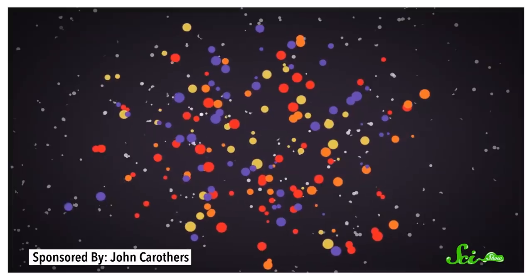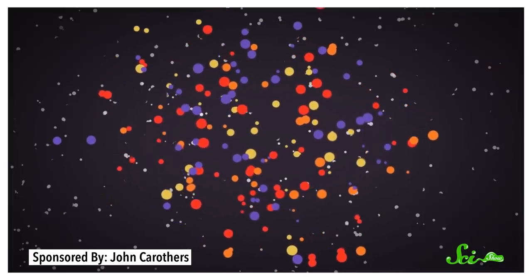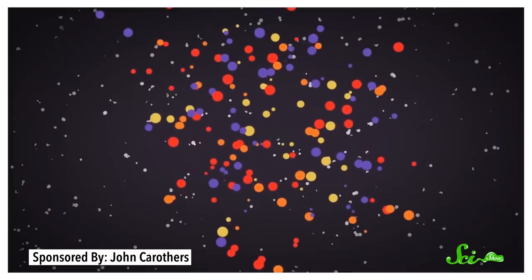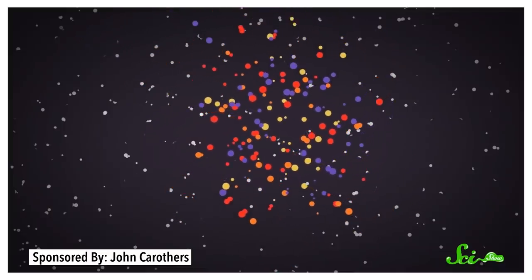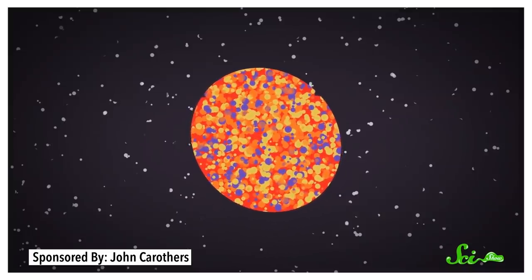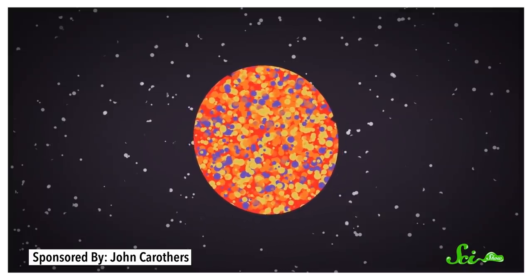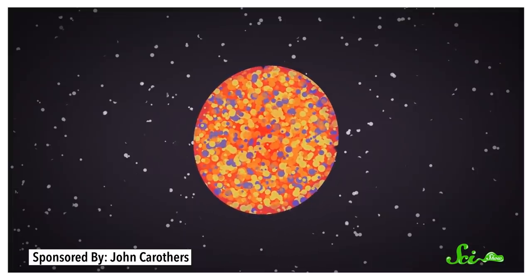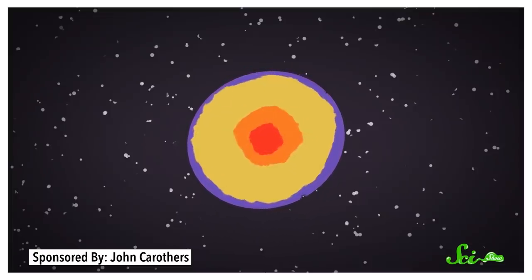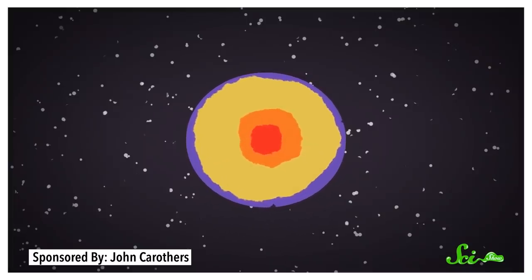To answer those questions, you need to travel back more than four billion years. Billions of years ago, Earth started as a cloud of dust and grains left over from the sun's formation. Over time, those pieces slowly balled together into proto-Earth. That ball was made of all kinds of elements, and as it aged, the denser ones, like iron, sank toward the center to become the Earth's core, while the lighter ones stayed toward the outside.